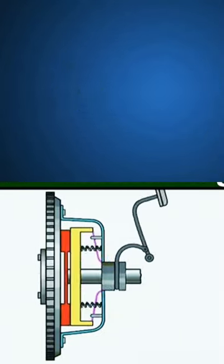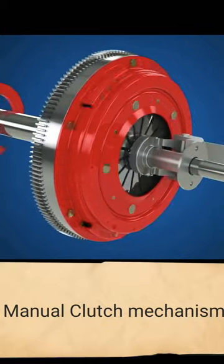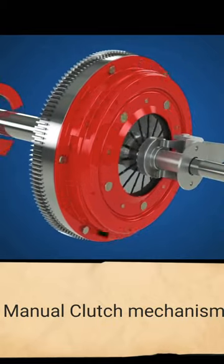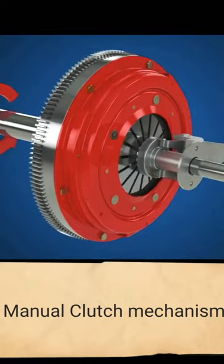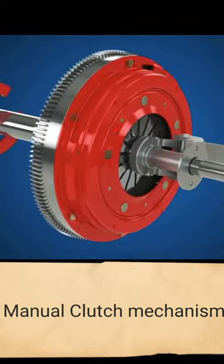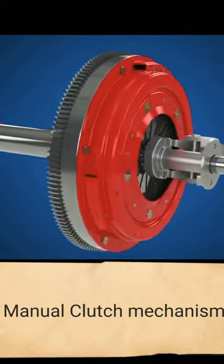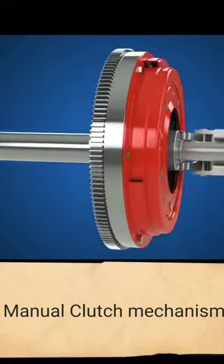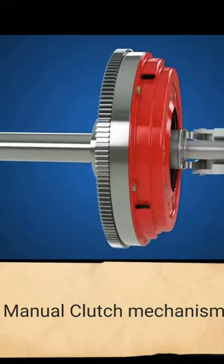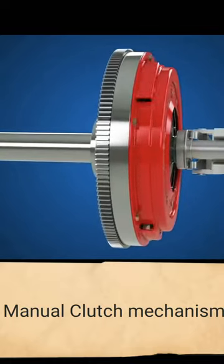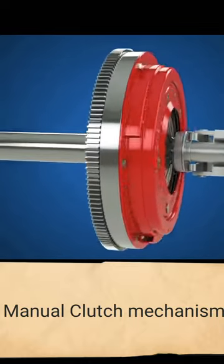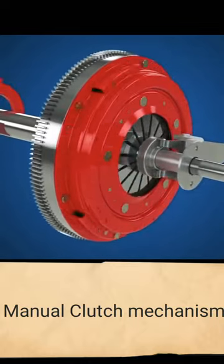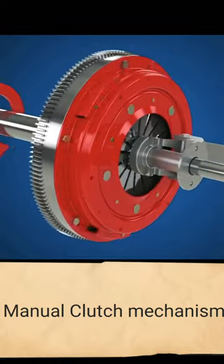Clutch basics: The clutch is a mechanism that smoothly transmits and cuts off engine power to the transmission by engaging and disengaging. The clutch cover and flywheel always revolve together with the engine. When the clutch cover pushes the clutch plates against the flywheel, engine torque is transmitted to the transmission.